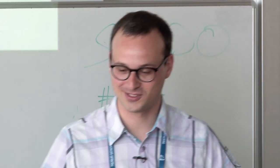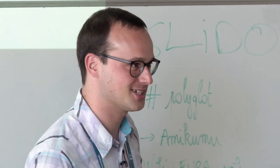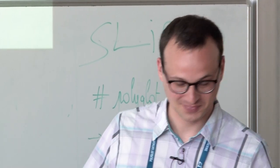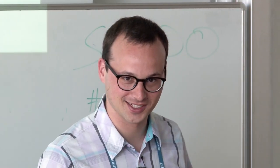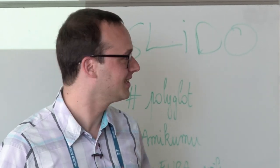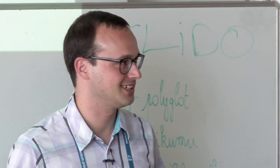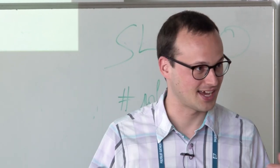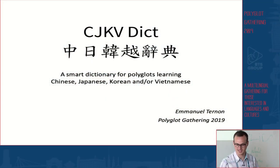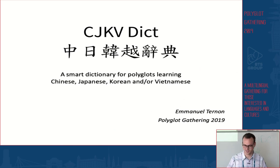Thank you everyone for coming to this presentation. My name is Emmanuel Turnon and I'm a software engineer by profession, but I also have a passion for languages — more specifically East Asian languages. Today I'm going to talk about CJKVDICT, which is basically a small dictionary for polyglots that I created, if you're learning Chinese, Japanese, Korean, and/or Vietnamese at the same time, as you'll discover throughout the presentation.